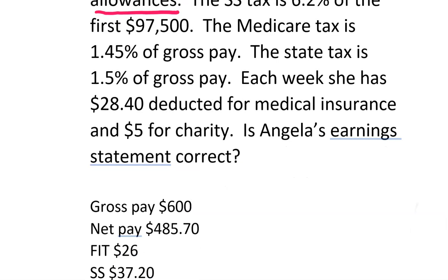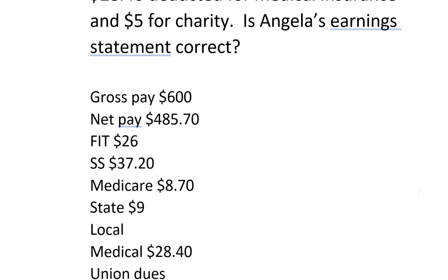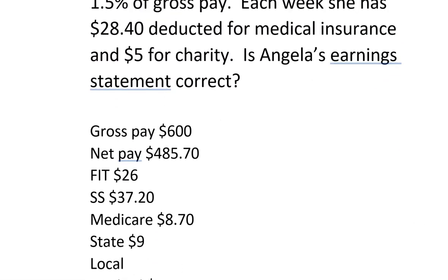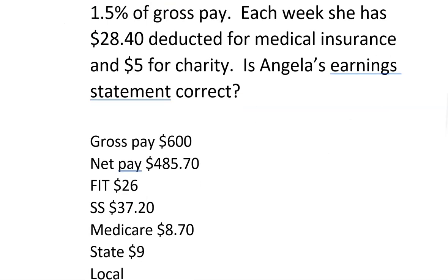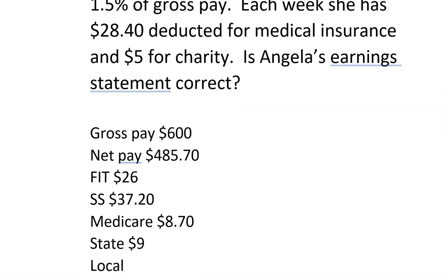The first thing we need to do is double check to see that all of these are actually correct. So the first thing you would do is look in the back of the book at the table for married, $600, look at three allowances, and that is correct. So I'm going to just put 'table in back.' So that's okay.